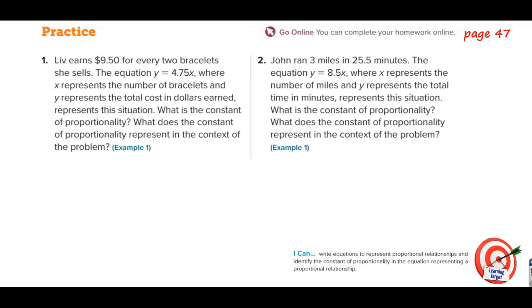Liv earns $9.50 for every two bracelets she sells. The equation y equals 4.75x, where x represents the number of bracelets and y represents the total cost in dollars earned, represents this situation.